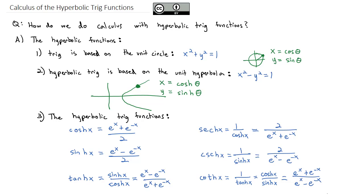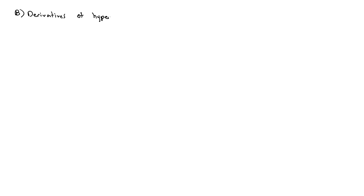We can do all the trig we saw back in trigonometry with these hyperbolic trig functions. The formulas are very much the same with slight differences on occasion, but we're interested in the calculus of the hyperbolic functions. So we're going to jump straight to calculating derivatives of the hyperbolic functions. For the first one, we're going to derive it to see where the formula comes from.